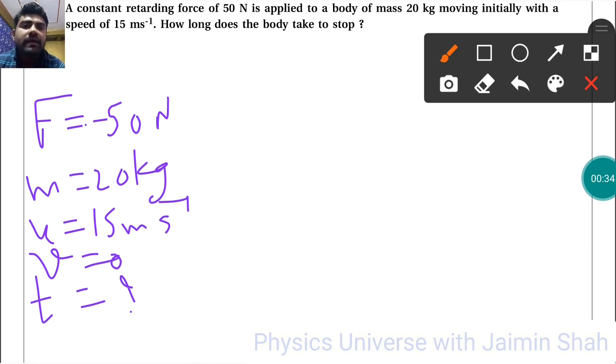To find T, acceleration formula we have final minus initial upon T. But we don't have acceleration, so find acceleration by this formula, mass into acceleration.